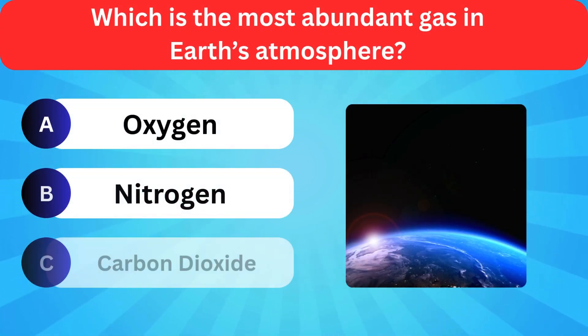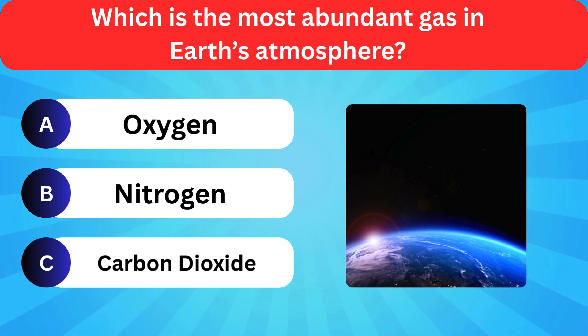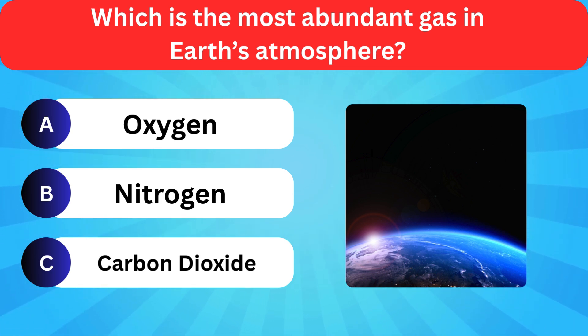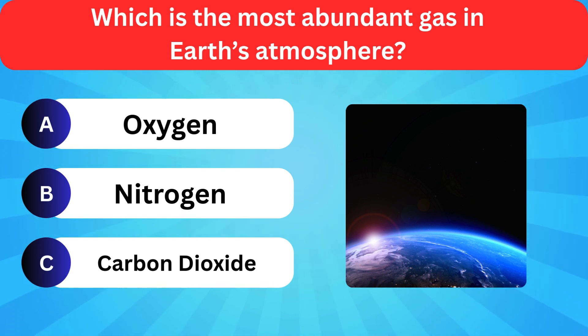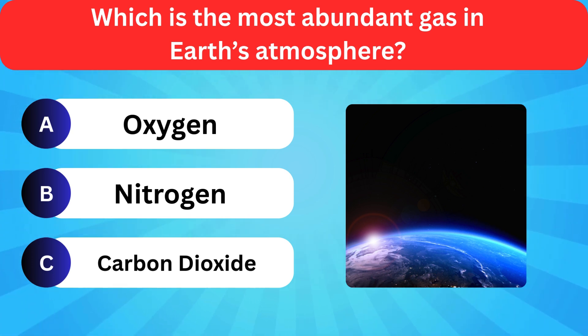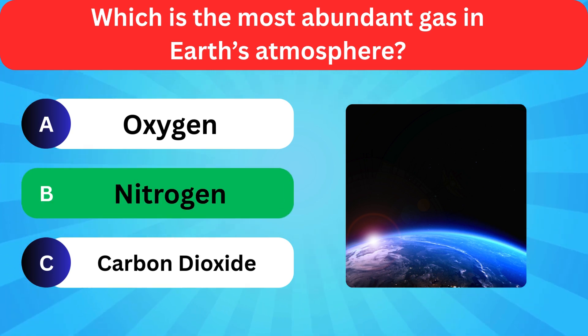Which is the most abundant gas in Earth's atmosphere? Options: Oxygen, Nitrogen, Carbon dioxide. Correct answer is nitrogen.